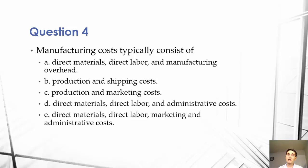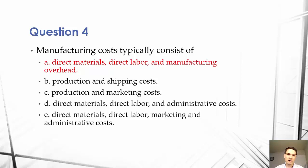So A is the correct answer here. An item typically consists of, in a manufacturing environment, direct materials, direct labor, and manufacturing overhead. So that is A. Let's look over the other answers and see why they're not correct.